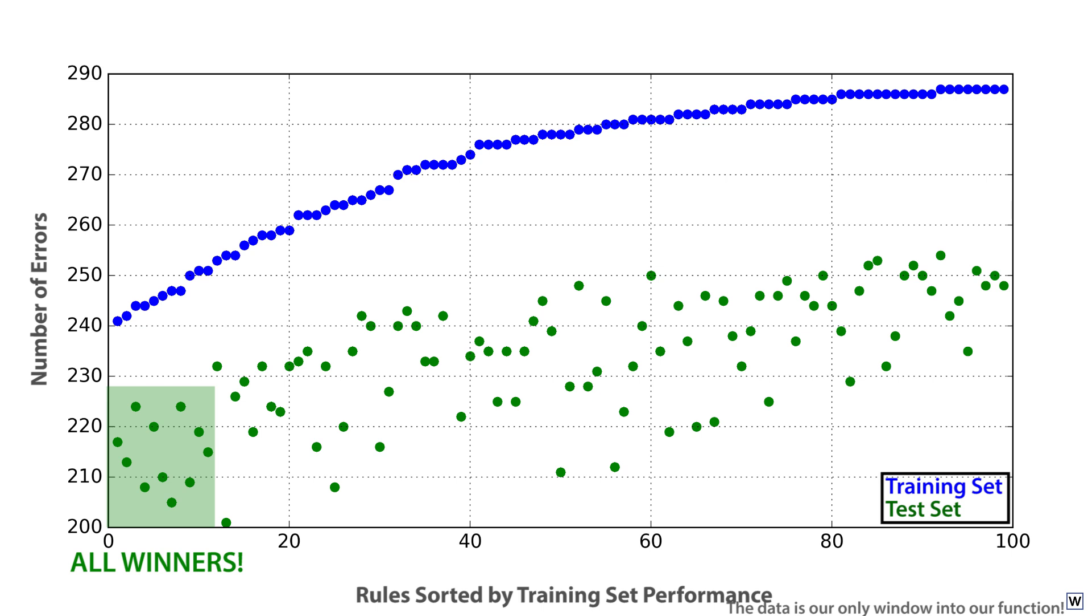So our mission is to find one of the best, not the single best needle in a haystack of 682,560 rules. Critically, the relaxation of this constraint, that we find the rule that offers the very best training set performance, is going to allow us to dramatically speed up our search process.